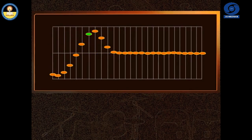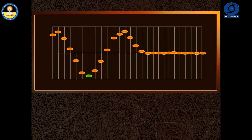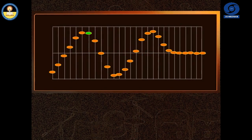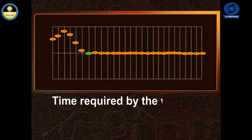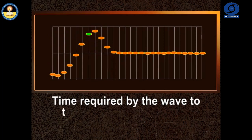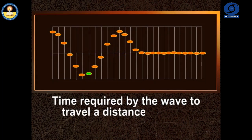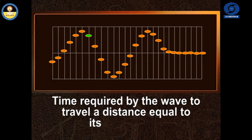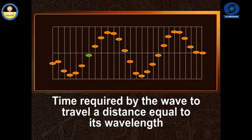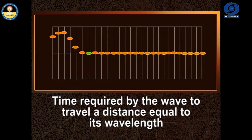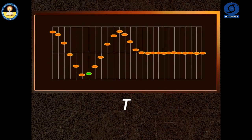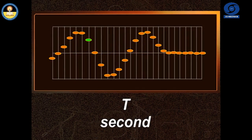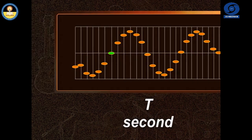So, the time period can also be defined as the time required by the wave to travel a distance equal to its wavelength. It is represented by letter T and its unit is second.